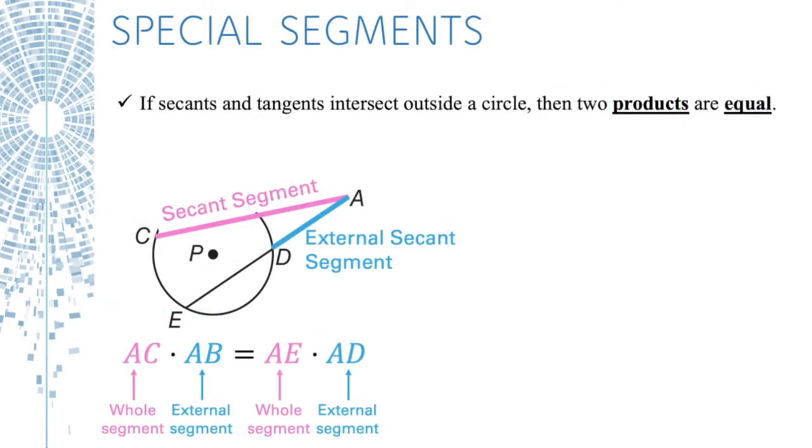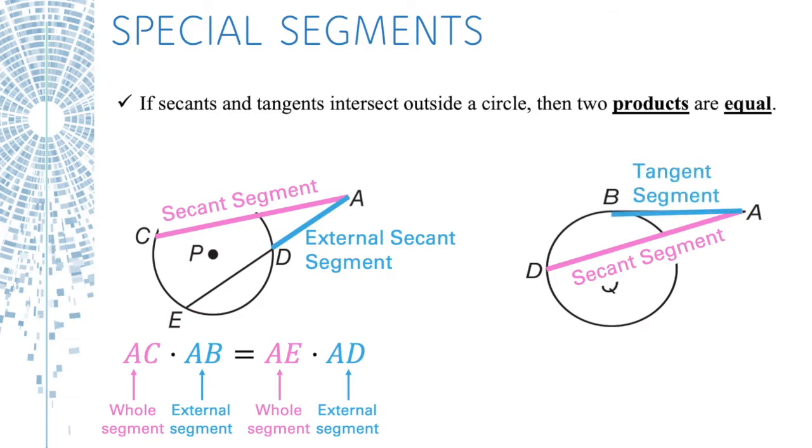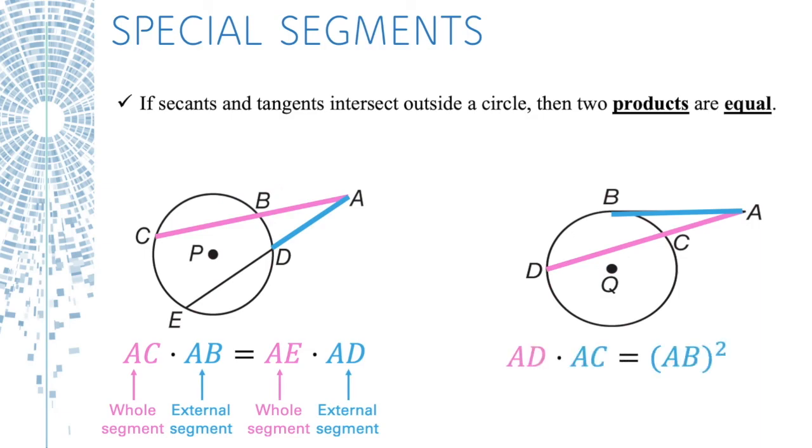Let's look at another scenario, and that's when one of those lines is a tangent. So we still have this secant segment. But AB, well, it doesn't go through the segment, so that one's just called a tangent segment. Here's our magic formula for this one.